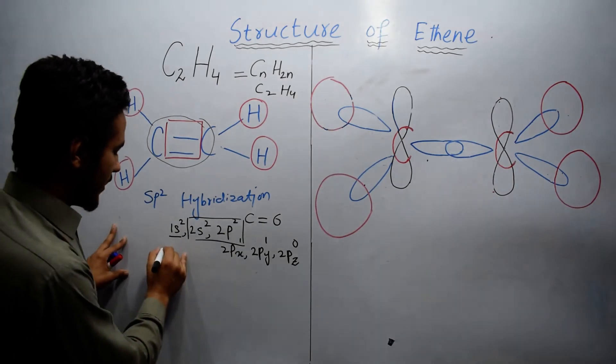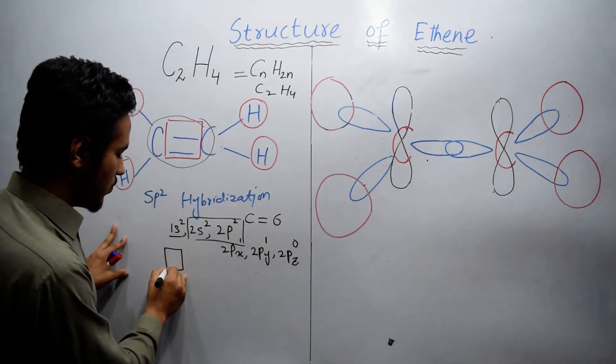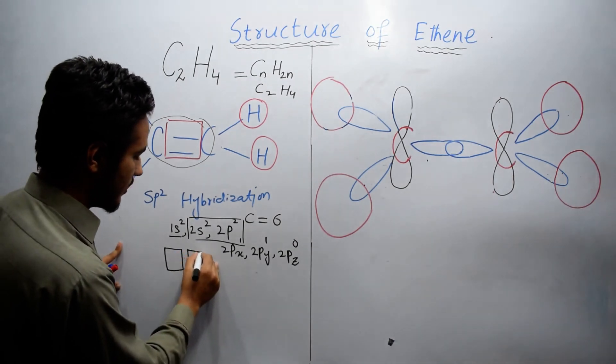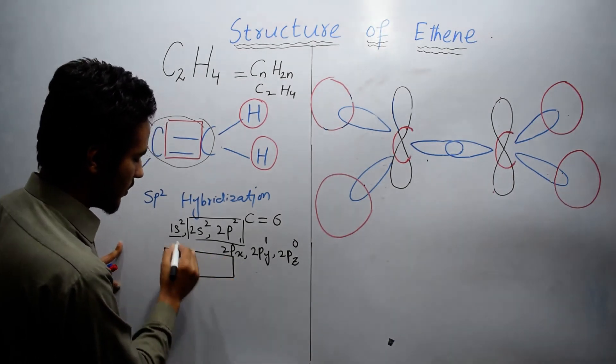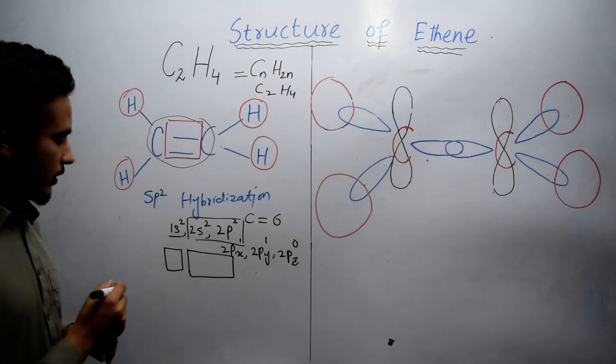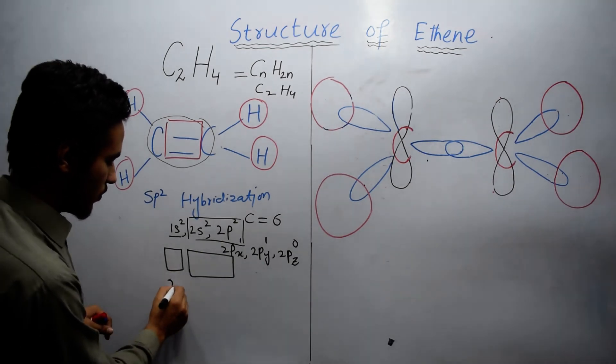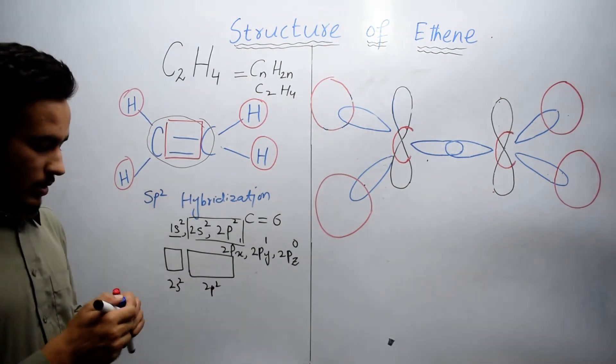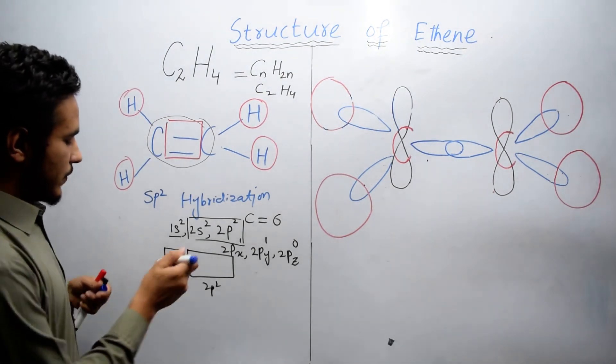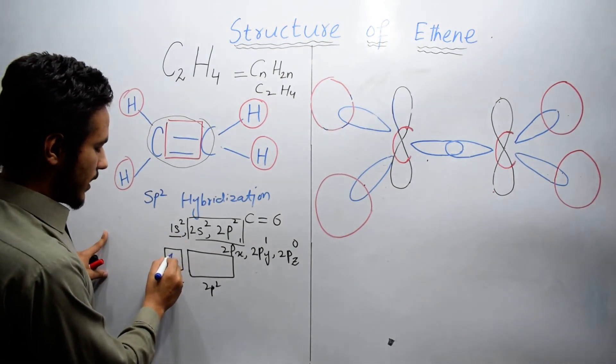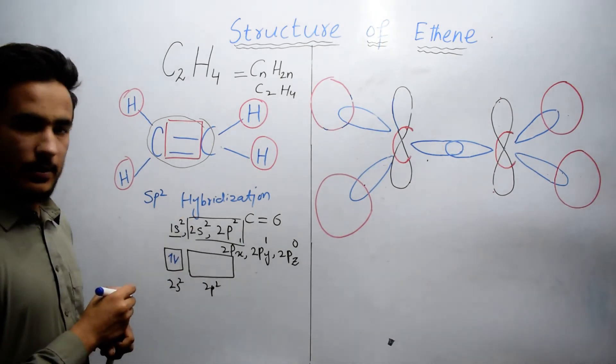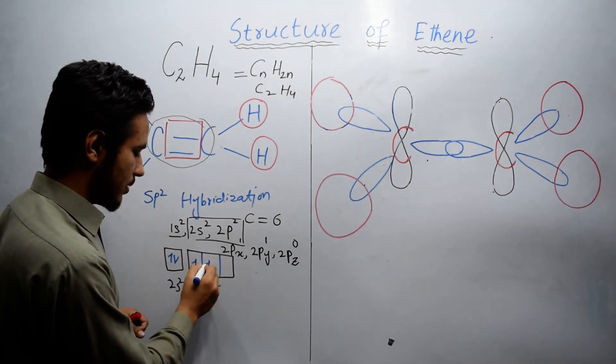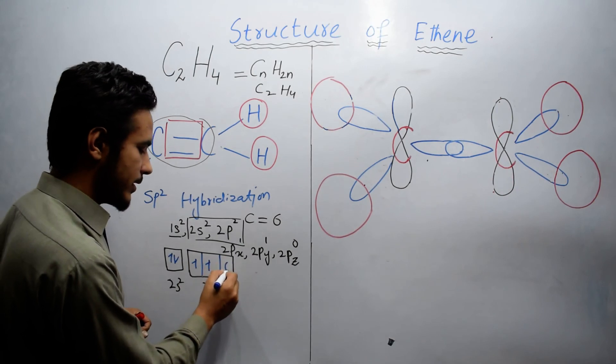Here we have atomic orbital 2p2. Here we have atomic orbital 2p2, and this is 2s2. We have 2 electrons in 2s, while in 2p we have 2 electrons, and Pz is empty.